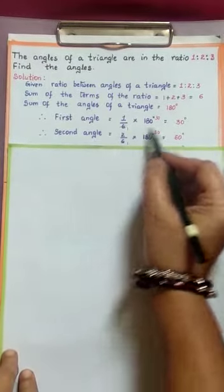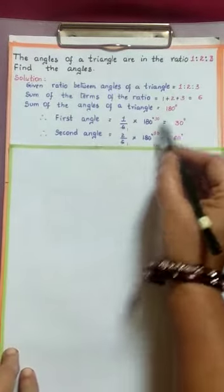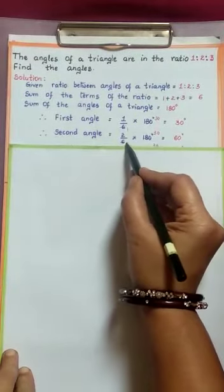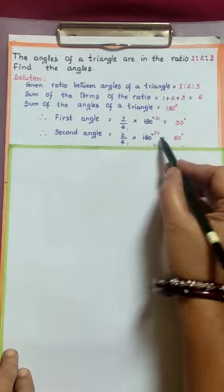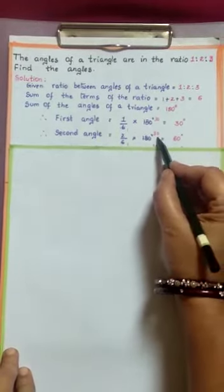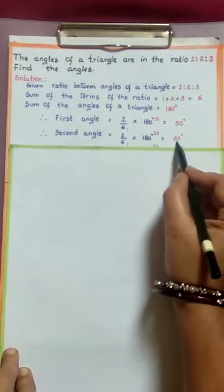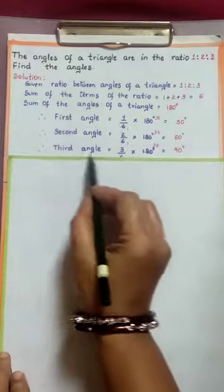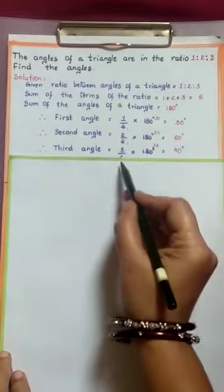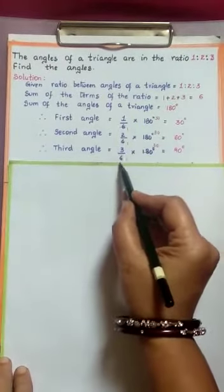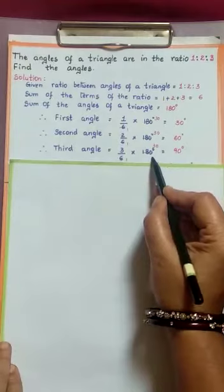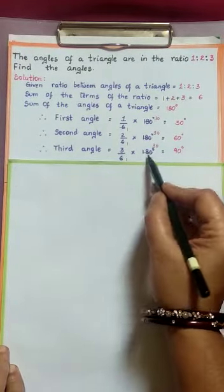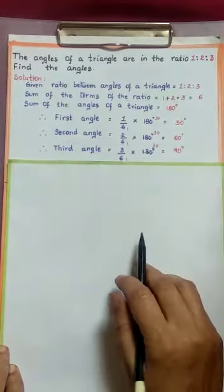Second angle: second part by total parts — 2/6 into 180 degrees. Simplifying, 6 goes into 180 thirty times, so 2 times 30 is 60 degrees. Third angle: third part by total parts — 3 by 6 into 180 degrees. Again, cancellation gives 6 into 30 is 180, so 3 times 30 is 90 degrees.